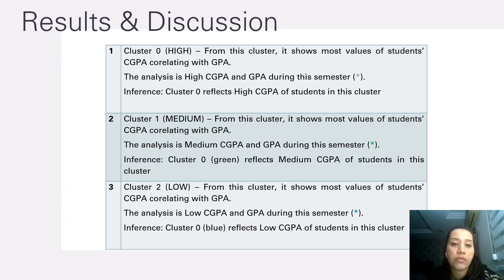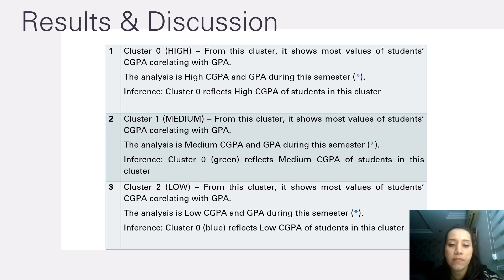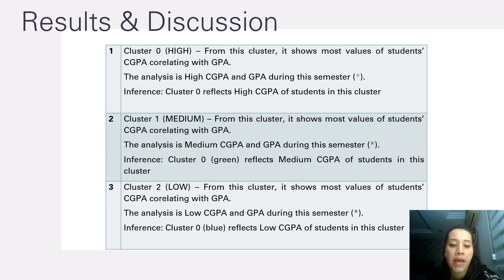Moving on to results and discussion. The three clusters determined were: cluster 0, which demonstrated high GPA and CGPA; cluster 1, which reflects medium CGPA; and cluster 2, which reflects low GPA and CGPA of students.